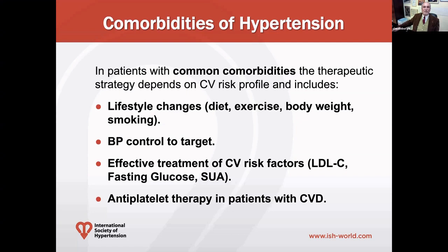Since most of these comorbidities involve additional risk factors, it's very important that these are treated in the right way. In the hypertensive patient, we should manage LDL cholesterol and all abnormalities of the lipid profile, the glucose profile, and recently, evidence supports the importance of managing serum uric acid. Since most patients have some kind of atherosclerotic and pro-thrombotic disease, antithrombotic treatment also seems very important.